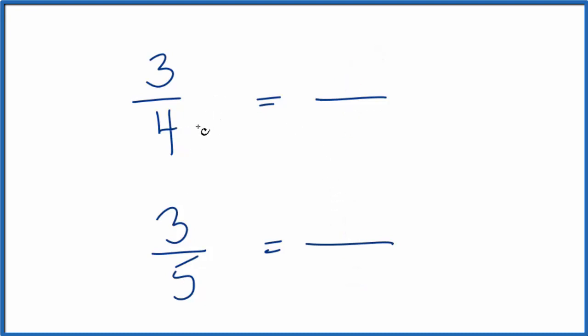So I know that four times five, that would give me twenty. And five times four, that would give me twenty. And I'd have the same denominator. But I can't just multiply by five. I need to multiply by five over five.